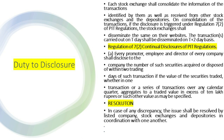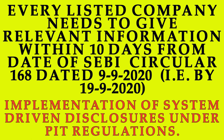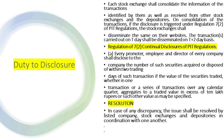The transaction carried out on T day shall be disseminated on a T+2 day basis. Under Regulation 7(2) of the PIT Regulations — continual disclosures — every promoter, employee, and director of every company shall disclose to the company the number of securities acquired or disposed of within 2 trading days of such transaction, if the value of securities traded, whether in one transaction or a series of transactions over any calendar quarter, aggregates to a traded value in excess of 10 lakh rupees or such other value as may be specified.